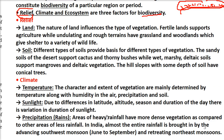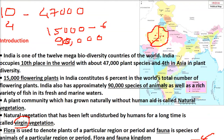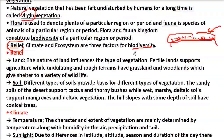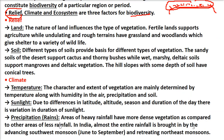In areas with less rainfall, you get less trees and less plants. Areas getting over 200 centimeters of rain get a lot of different species of trees and animals. Ladakh region gets very little precipitation and therefore very little flora and fauna, while Andaman and Nicobar Islands, which receive heavy rainfall, are full of greenery and diverse animals.